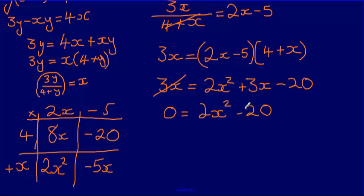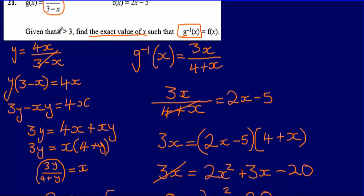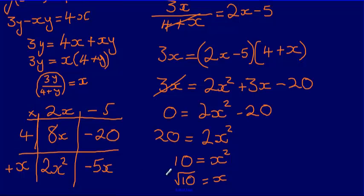This makes it a bit easier — no need to factorise. From 2x squared minus 20 equals 0, we get 2x squared equals 20, so x squared equals 10. Therefore x equals the square root of 10. The square root of 10 gives two answers, but since we're told x is greater than 3, we take the positive root: x equals root 10.